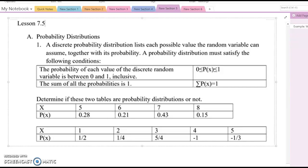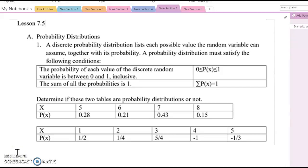Lesson 7.5: Probability Distributions. A discrete probability distribution lists each possible value the random variable can assume together with its probability.